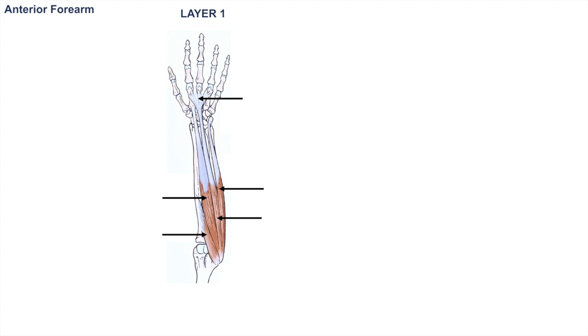Hey everyone, this lesson is on the anatomy of the forearm. Today we're looking at the muscles and tendons of the forearm. Learning any anatomy can seem very daunting, but if we break it down into pieces, it will help us better remember and better understand. And that's what we're going to do today.